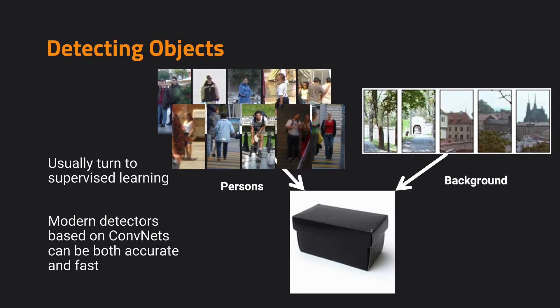Detecting objects has been discussed in the previous lecture. Basically, we can use supervised learning in combination with a large set of data and labels to tell the model what objects we want. With those positive examples, our supervised learning models will be able to learn how to find those positive examples in a new image. Usually we use a black-box model to learn how to detect those objects, and modern detectors based on convolutional networks can detect objects very accurately in a new image. Sometimes we can also achieve a very good balance between accuracy and efficiency.